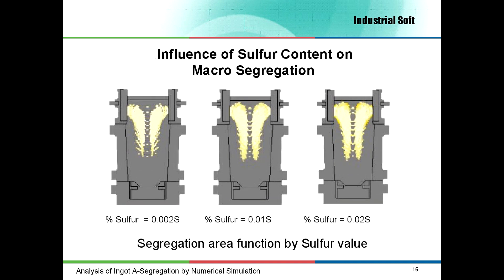To analyze the influence of sulfur content on A-segregation, the critical value alpha has been calculated for sulfur values of 0.002%, 0.01% and 0.02% of sulfur. As expected, the A-segregation area size increases with the sulfur content.